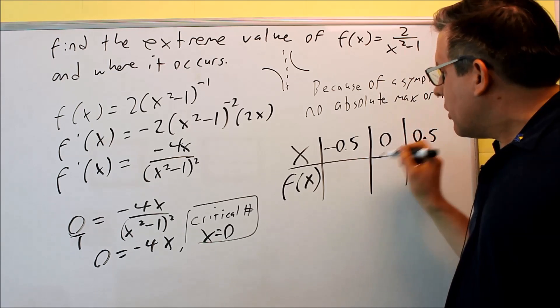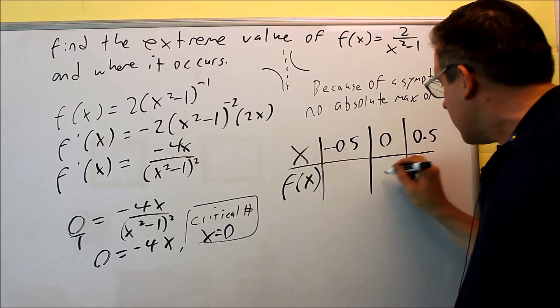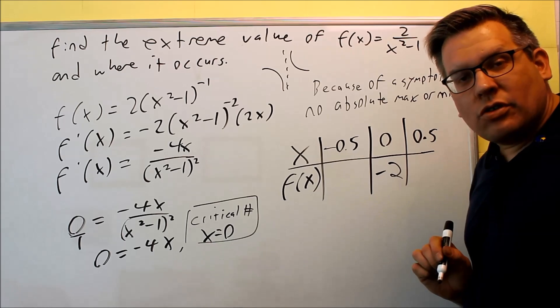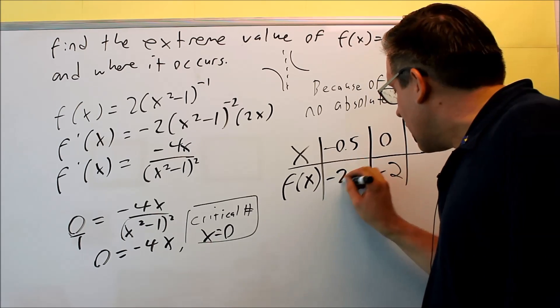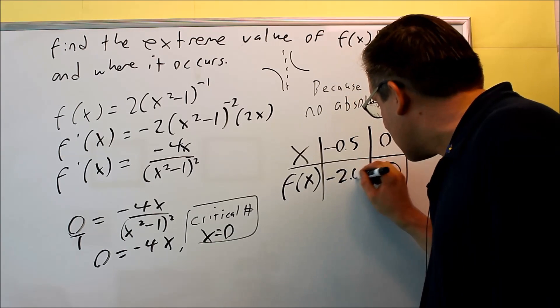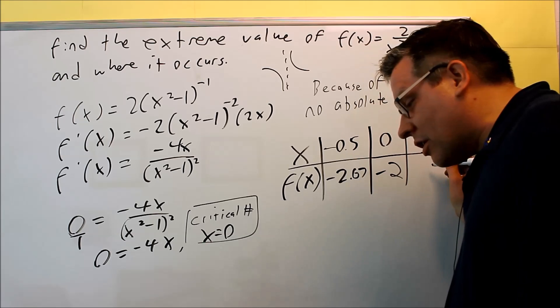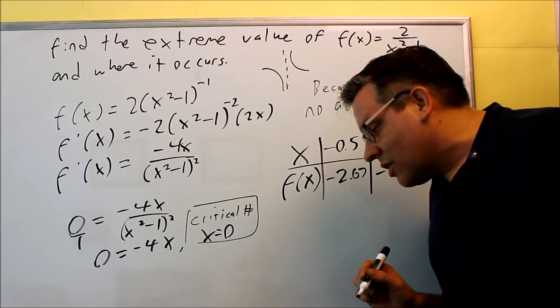So of course, if I'm putting this into the original one, if I put 0 into the original one, I'm going to get negative 2. I'm going to test each of these and put that in there. This I'll get about negative 2.67. This other one over here, I'll also get negative 2.67.